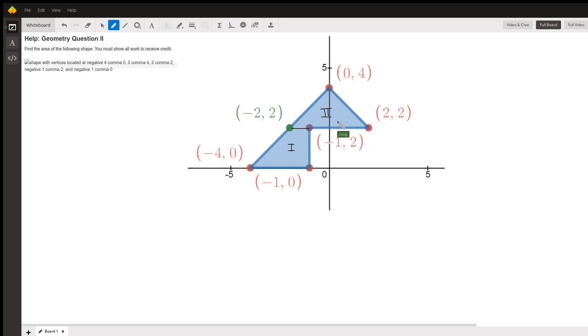So this is a horizontal segment, and the distance from -2 to 2 is 4. And this altitude goes from 2 up to 4, so the height is 2. The area of a triangle is one-half base times height.